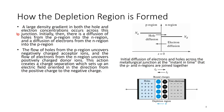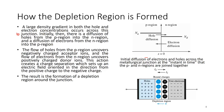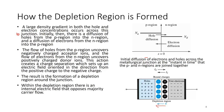This action creates a charge separation which sets up an electric field oriented from the positive charge to the negative charge. The electrons traveling from N to P recombine with holes traveling from P to N, leaving positively charged donor ions and negatively charged acceptor ions. When there is a collection of positive and negative charge, an electric field is formed, resulting in the formation of a depletion region around the junction.